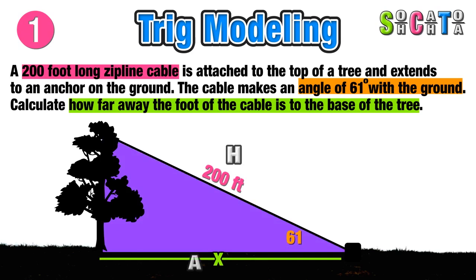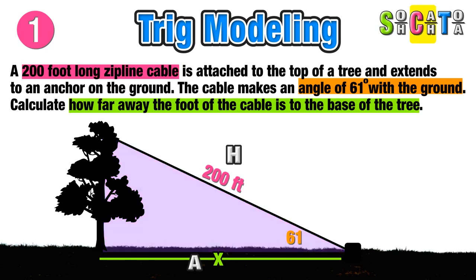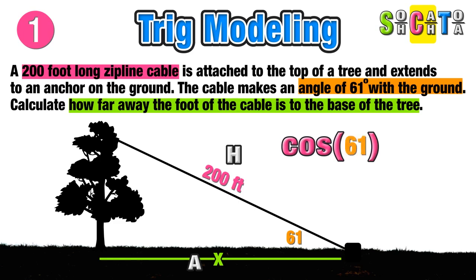Since 61 degrees is our reference angle, we know that x — the bottom of the triangle — is our adjacent side and the 200 feet is our hypotenuse. Using SOHCAHTOA, adjacent and hypotenuse means we are going to use cosine to solve for x.